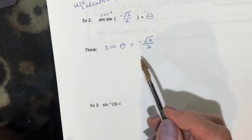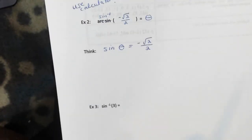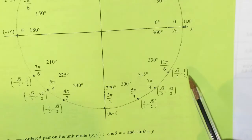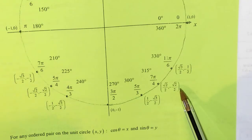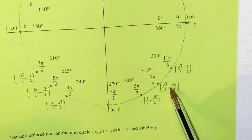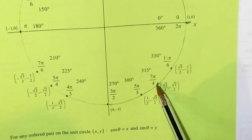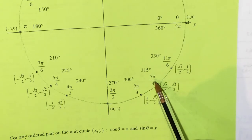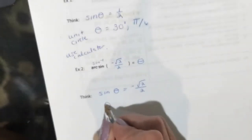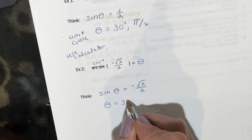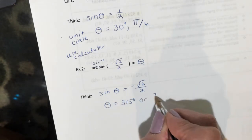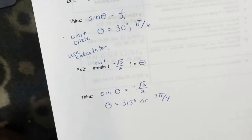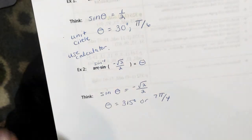Get out your unit circle. Sine is negative in quadrant 4, and we're looking for negative root 2 over 2. Here it is — negative root 2 over 2. So that is 315 degrees, or 7pi over 4, depending on whether we're in degrees or radians.